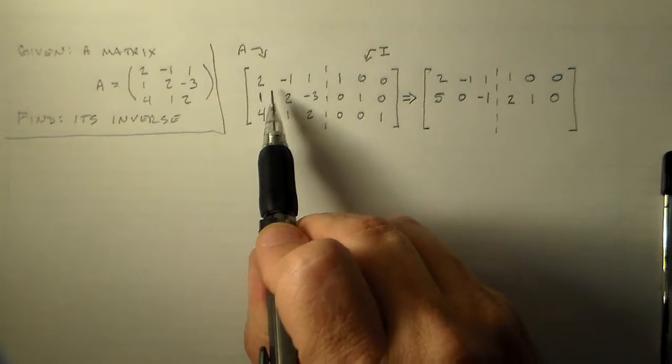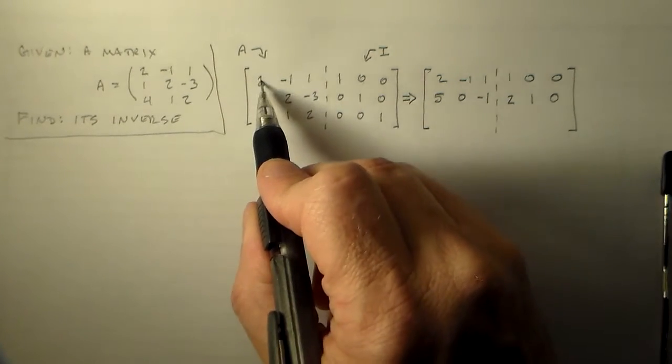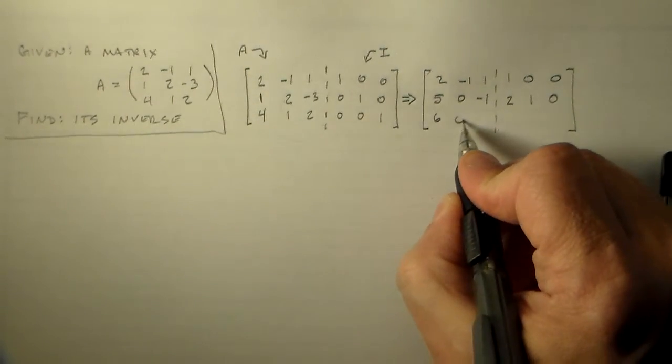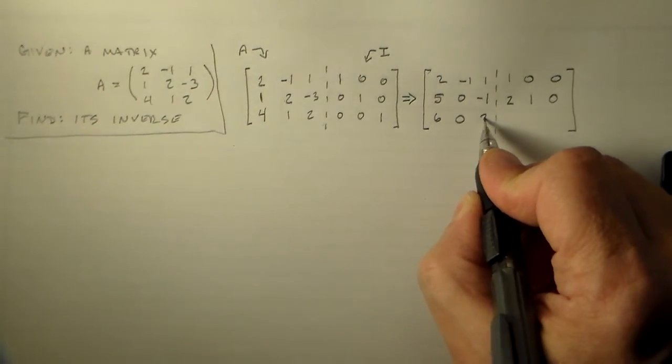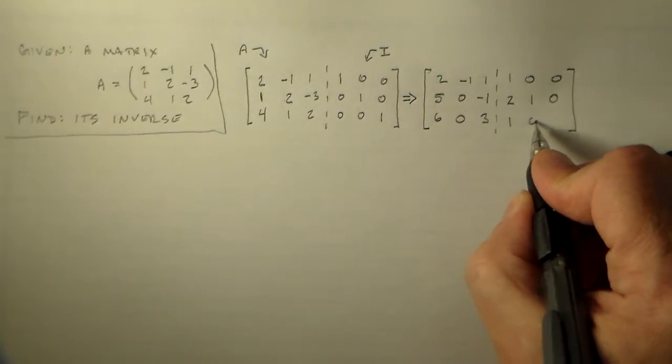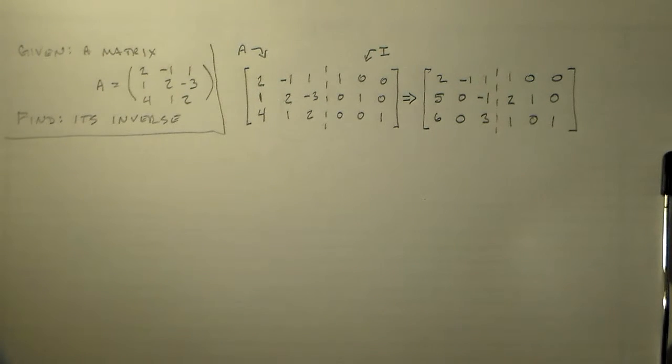Again, now I don't multiply this by anything, I just add each row down here. So 2 plus 4 is 6, minus 1 plus 1 is 0, 1 plus 2 is 3, 1 plus 0 is 1, 0 plus 0 is 0, 0 plus 1 is 1. Just like that, very very simple.